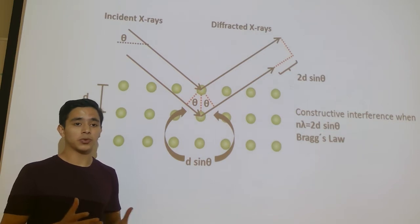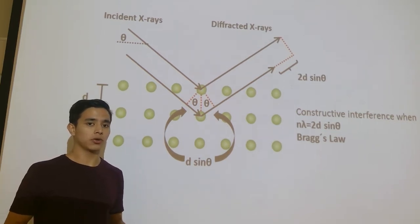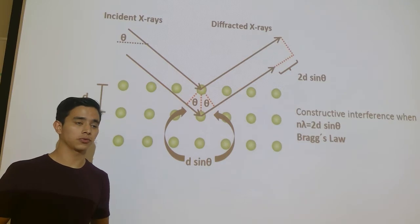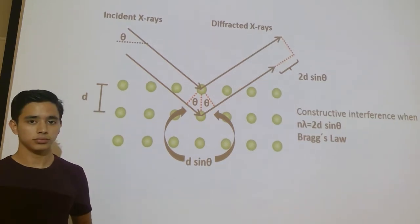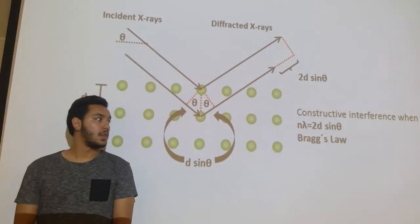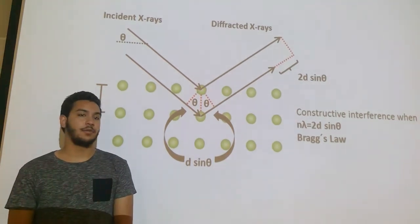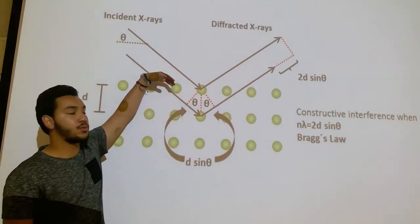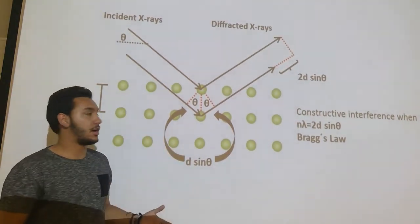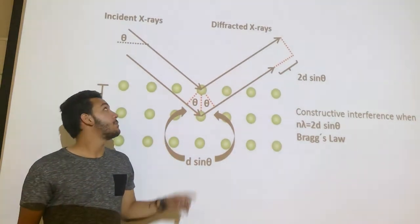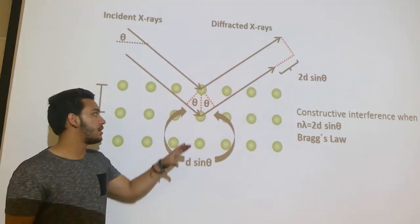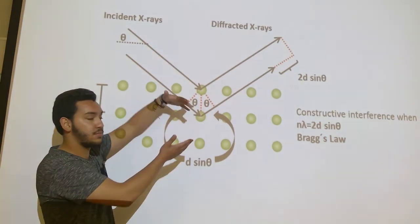So when the incident X-ray comes upon the crystalline solid, it will diffract. Why? Because the X-rays wavelength is really close to that distance between planes.